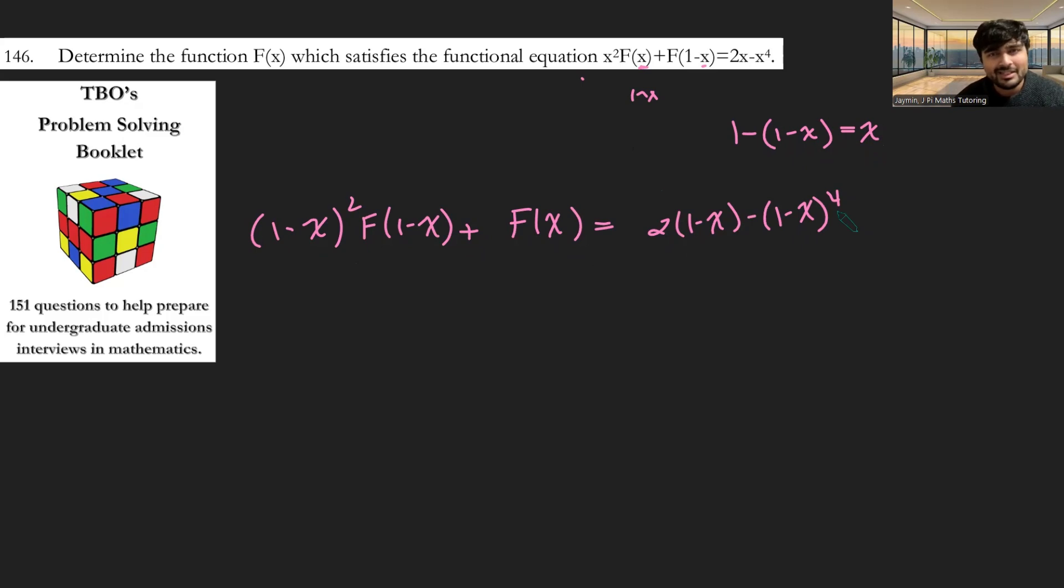And then maybe what you realize is this is just another equation with f(x) and f(1-x) in. And at the start, we had an equation with f(x) and f(1-x) in. This is just a simultaneous equation problem. We can replace this f(1-x) here with, well, just from rearranging this first equation. So we have (1-x)² multiplied by capital F of 1-x, which from the first equation is simply going to be 2x minus x⁴ minus x²f(x). And that's going to equal 2 lots of 1-x minus (1-x)⁴, like so.